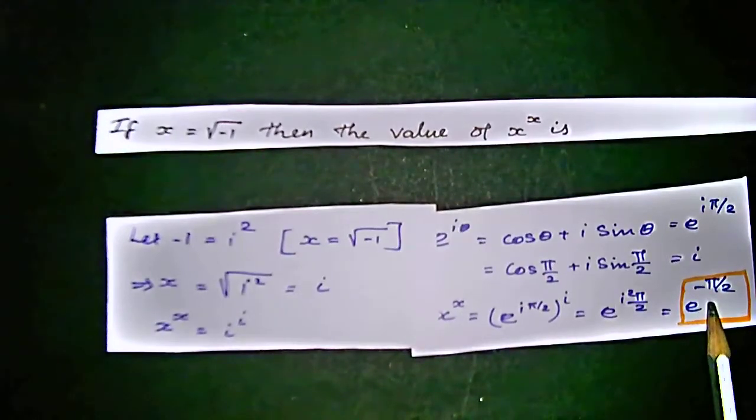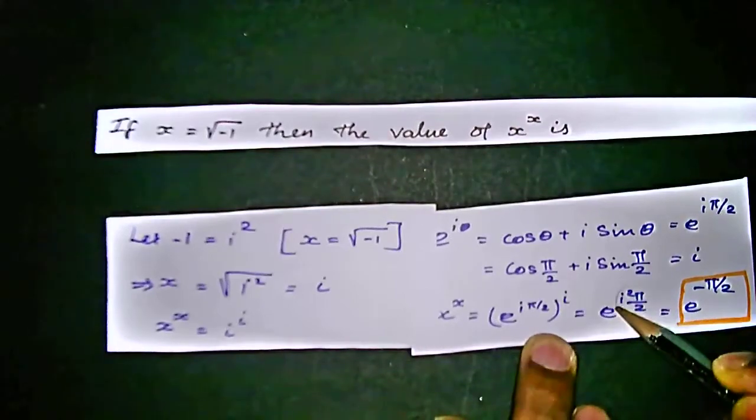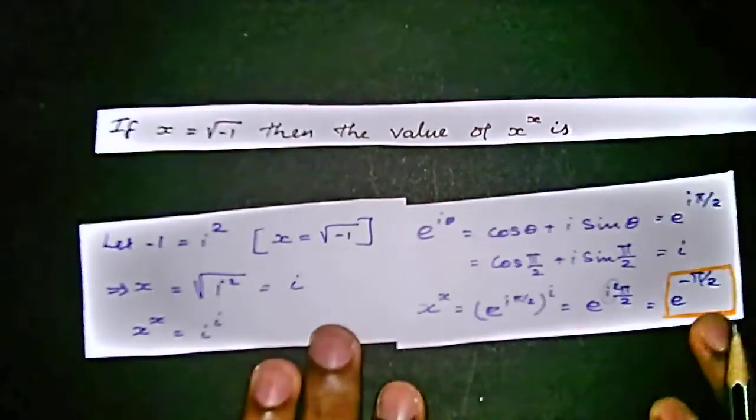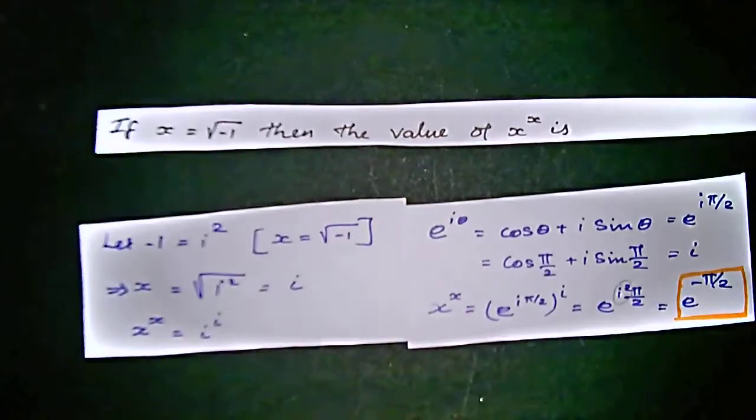So applying that minus 1 value here, we'll get e power minus pi by 2. This i squared value is replaced by minus 1, that is e power minus pi by 2. This is the value of x power x.